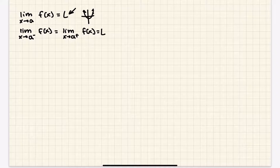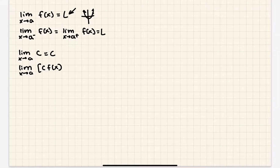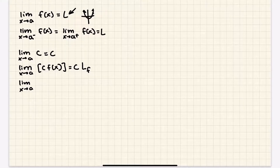So you can find limits graphically, numerically using a graph or a table, or analytically. We're going to be mainly focusing on analytically with properties of limits. First of all, the limit as x approaches a of any constant is just going to be that constant itself. And you can extend this: if you're multiplying a function by a constant c, you can factor out the constant, and then you just have the limit of f.